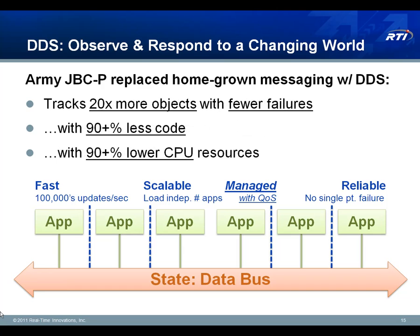Let me give you a real-world use case. The U.S. Army has a program called JBCP, otherwise known as Blue Force Tracker, which is responsible for keeping track of the locations of different objects on a battlefield. The original version was developed with a homegrown messaging solution; it's now being upgraded to use DDS instead. Their experience is that the new version based on DDS is able to track 20 times more objects than the previous generation — with increased reliability, significantly less code, and significantly lower CPU utilization. They've gone from a whole rack of machines down to just one or two.